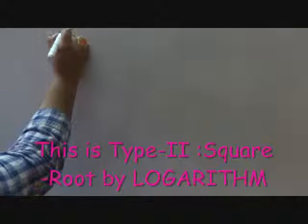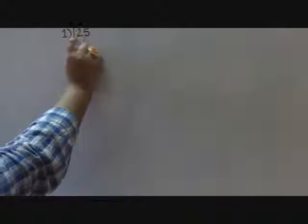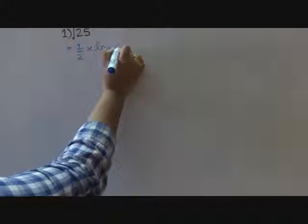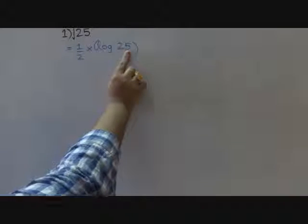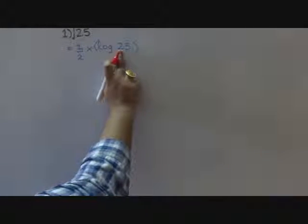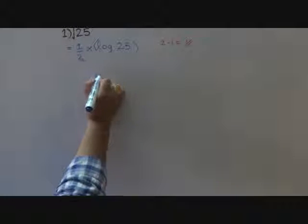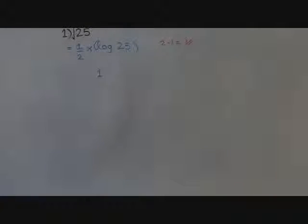Next we are going to calculate by the log method using a log table. The first number I'm taking is 25. The first step is you have to take the square root sign as 1 by 2, so I will write 1 by 2 into log of the number. Since 25 has two digits, the characteristic is 2 minus 1 equals 1. You can refer to my previous videos about log and antilog — I'll put a link in the description.